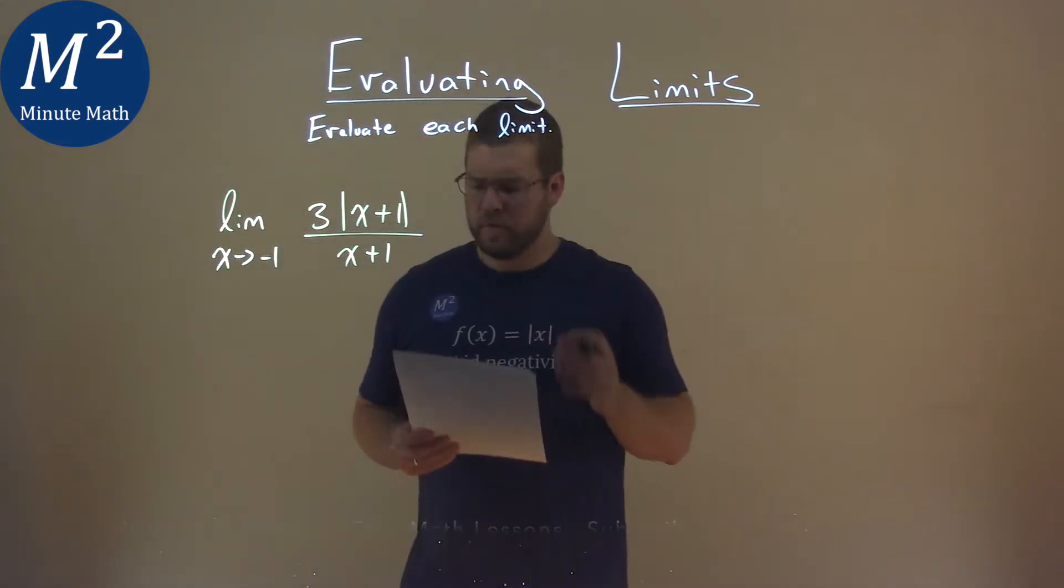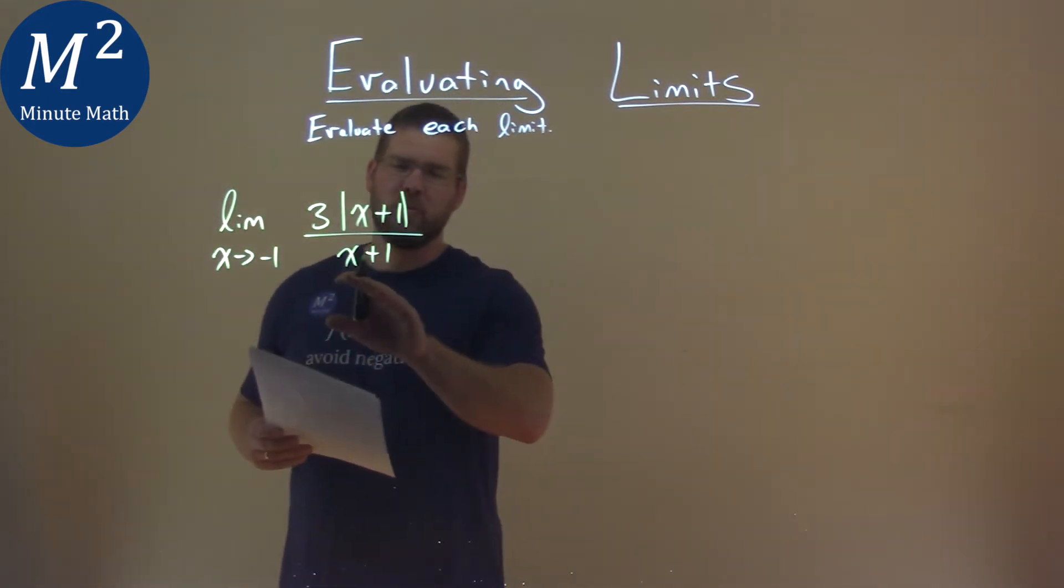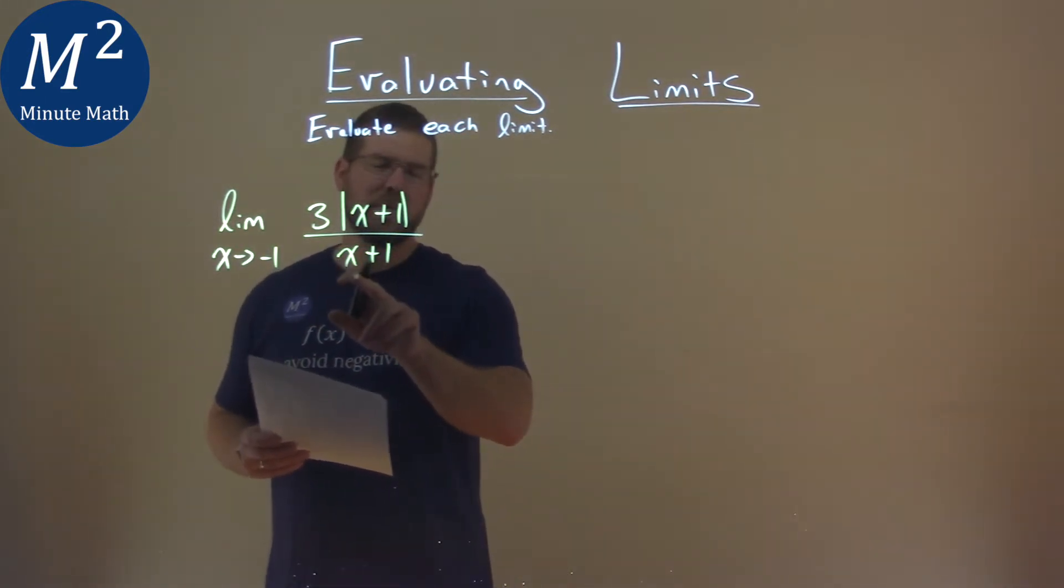To get a picture of this, I'm going to use a table here. We'll see what happens as we get close to negative 1. I know I can't put negative 1 in right away, it doesn't exist, because we'll be dividing by 0.